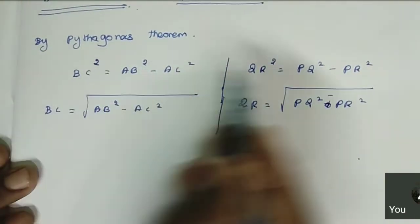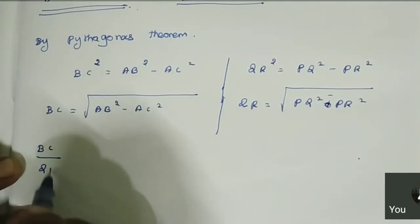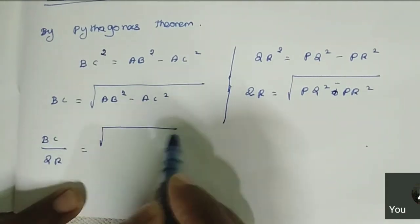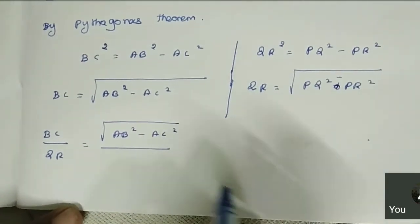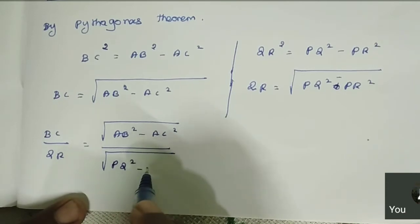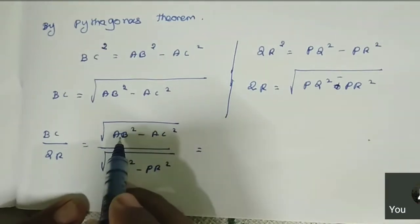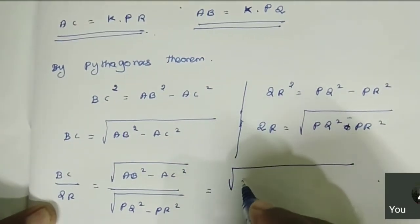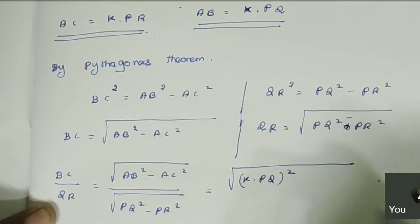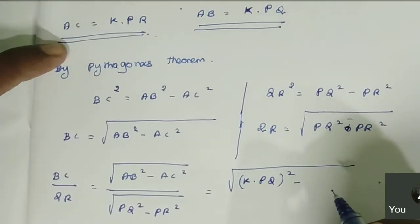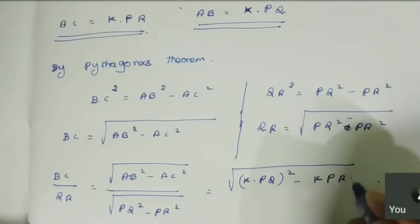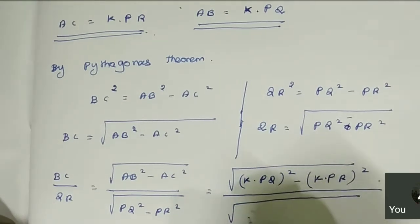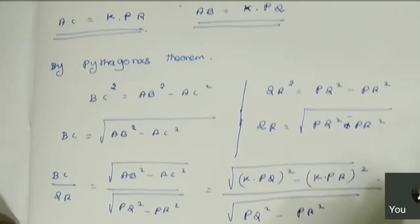Now we find BC divided by QR. BC equals root of (AB squared minus AC squared) and QR equals root of (PQ squared minus PR squared). Substituting the values AB equals K·PQ and AC equals K·PR, we get BC/QR equals root of ((K·PQ) squared minus (K·PR) squared) divided by root of (PQ squared minus PR squared).